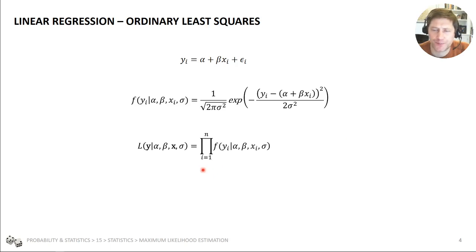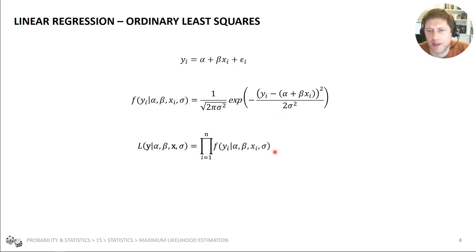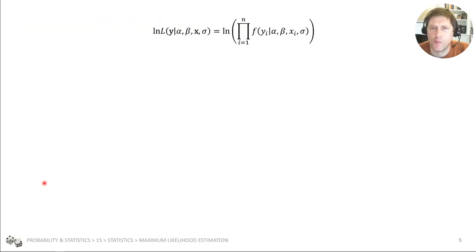The probability of getting all the values of y, given all the values of x, alpha, beta, and sigma — these are now vectors. It's the probability of one occurrence multiplied by the probability of the next and the next, so we've got a product term: the product of all the individual probability distribution functions. This is our likelihood estimator, and we want to make it as likely as possible that we are representing our data with the model.